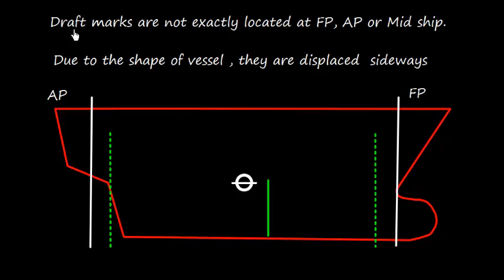However, we have one more challenge. The draft marks are not exactly located at forward perpendicular, aft perpendicular, or midship due to the shape of the vessel. They are slightly displaced sideways. For example, here is the forward perpendicular, which is a reference line, and the draft marks are displaced sideways.